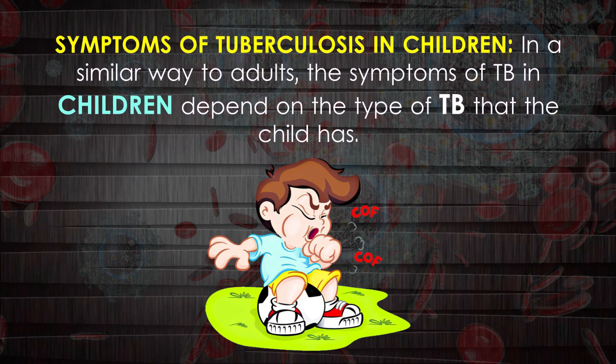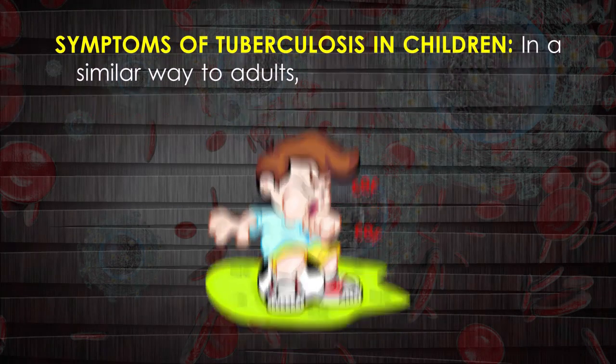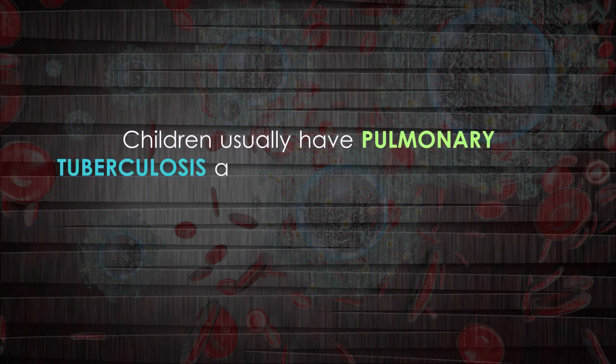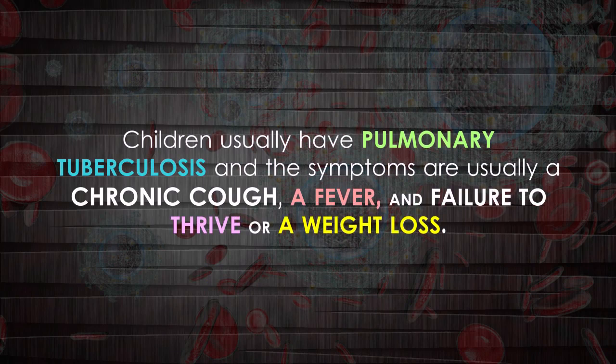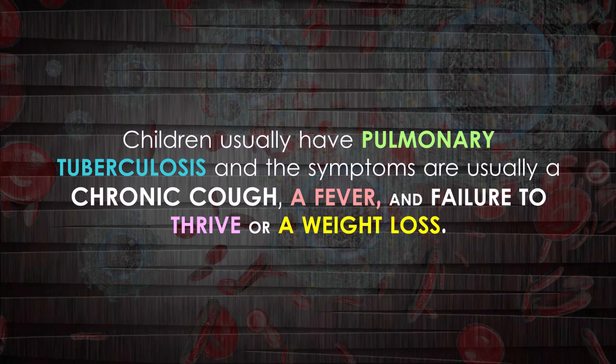In a similar way to adults, the symptoms of TB in children depend on the type of TB the child has. Children usually have pulmonary tuberculosis, and the symptoms are typically a chronic cough, a fever, and failure to thrive or weight loss.